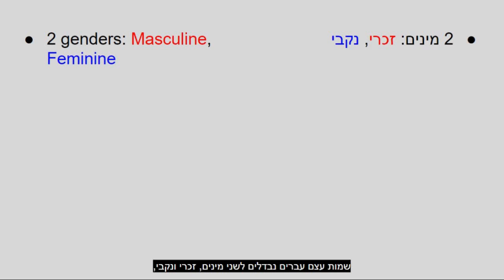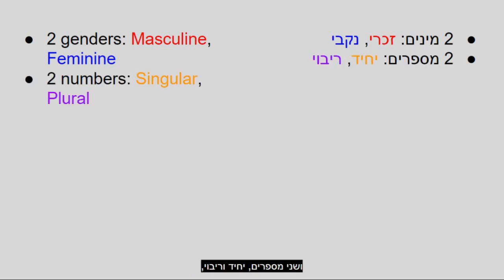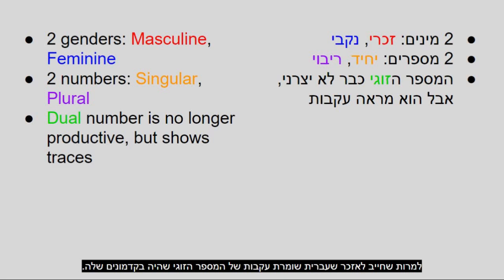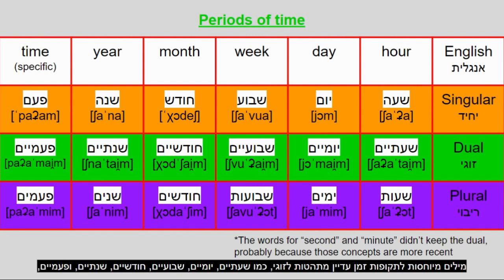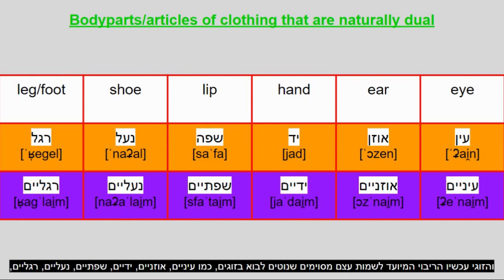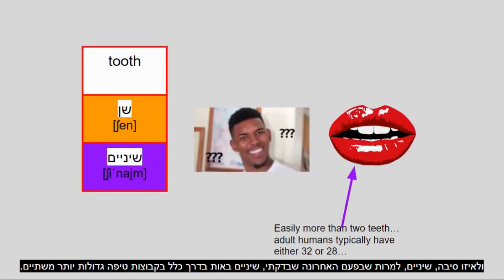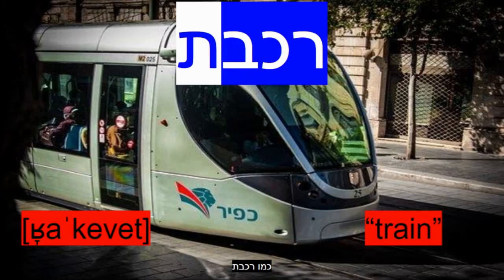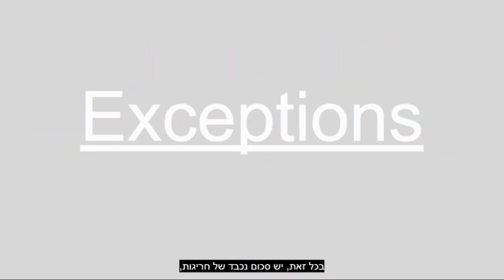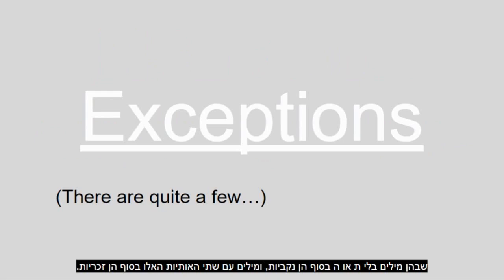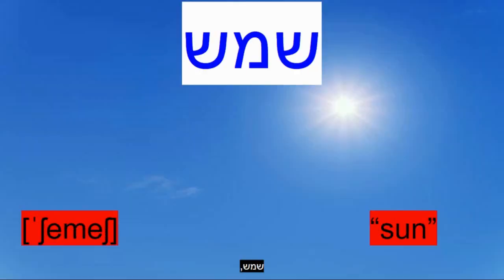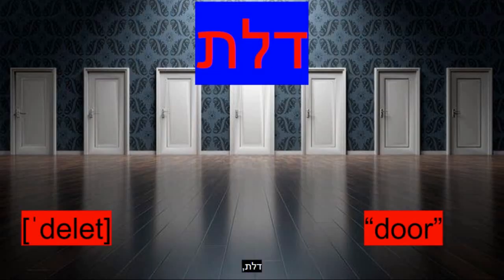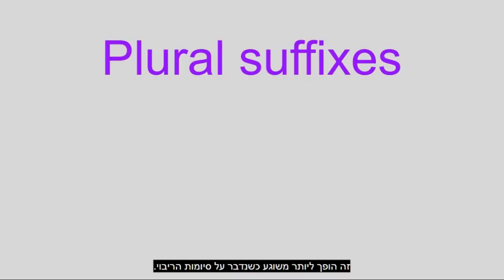Hebrew nouns are split into two genders — masculine and feminine — and two numbers — singular and plural — although Hebrew maintains traces of the dual number its ancestors used. Specifically, words related to periods of time still get inflected for dual, and the dual is now the designated plural form for certain nouns that come in pairs, and even for 'teeth,' even though teeth typically come in groups larger than two. In the singular, feminine nouns can be identified by ending with Tav or He, like 'rakevet' and 'sirah.' All other nouns tend to be masculine, though there are quite a few exceptions in both directions.